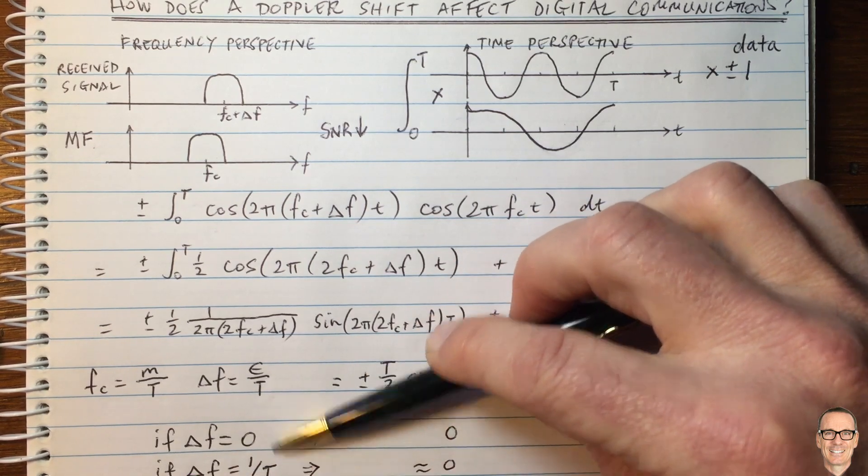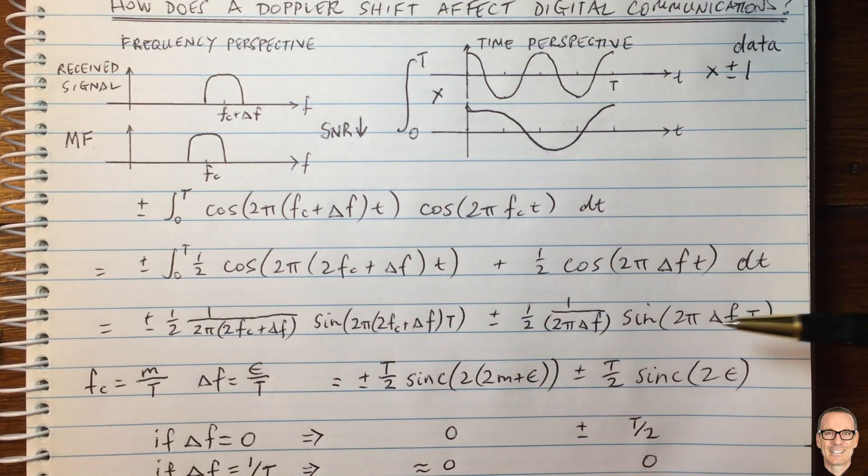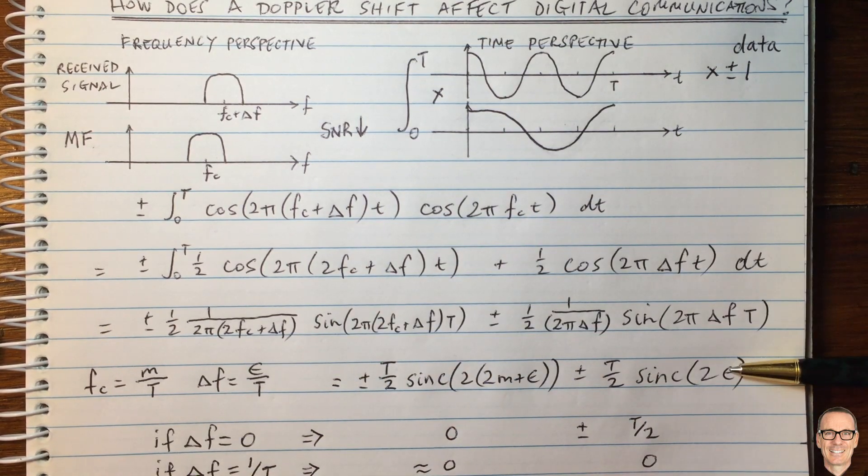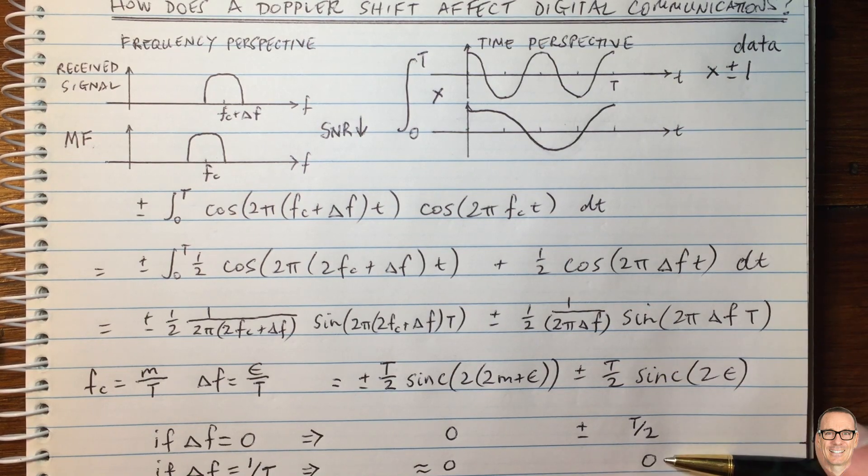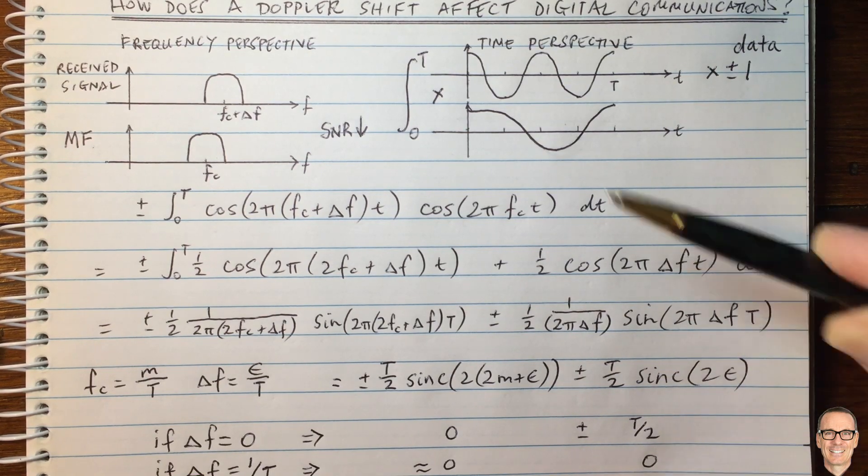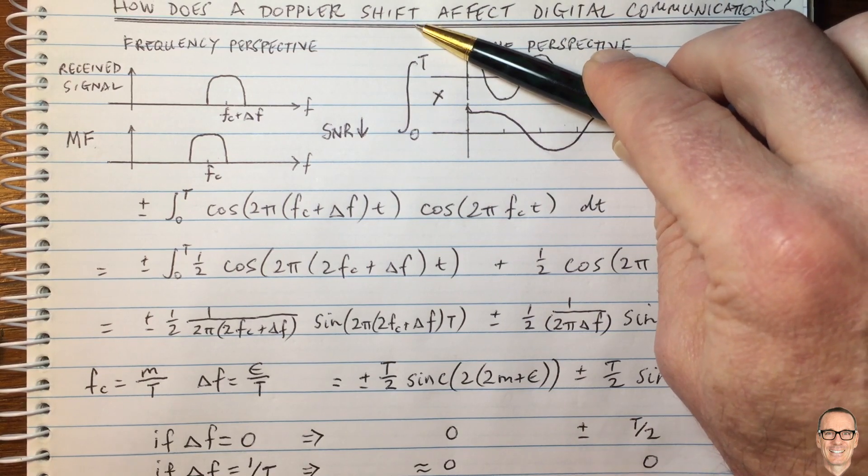So when epsilon equals one in here, sinc of one equals zero. So we can see here that this is an extreme case of the Doppler shift. When the delta F equals one on capital T, you actually get nothing coming out of your matched filter.